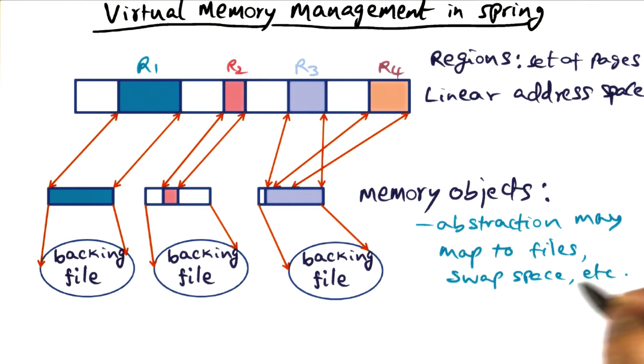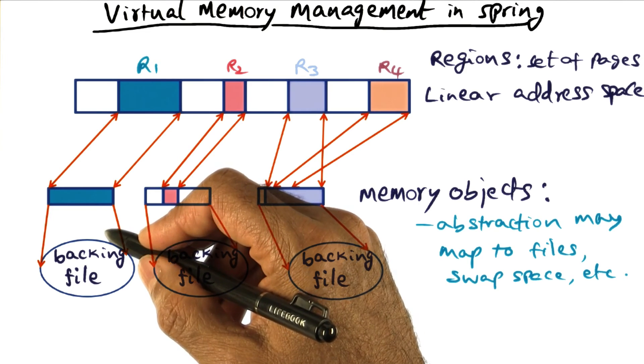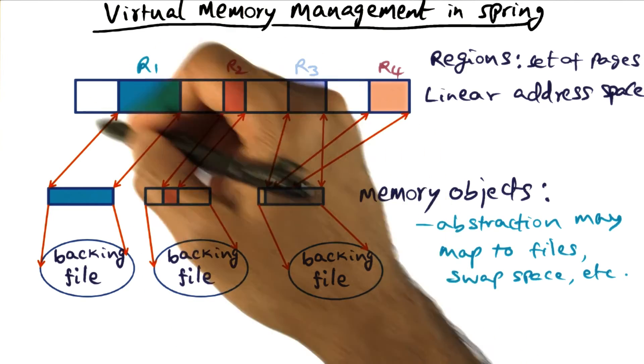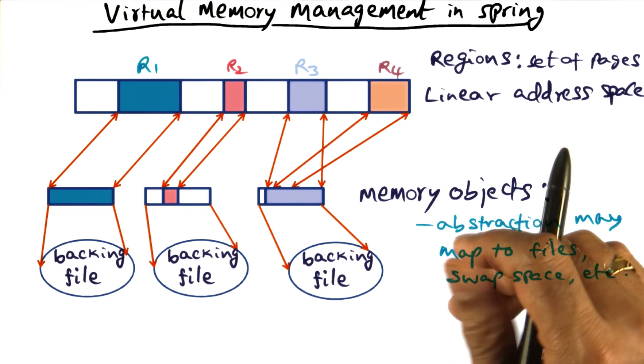It could be the swap space on the disk, or it could be specific files that are being memory mapped in order to access from a process address space. Those are the abstractions available in the virtual memory management system.